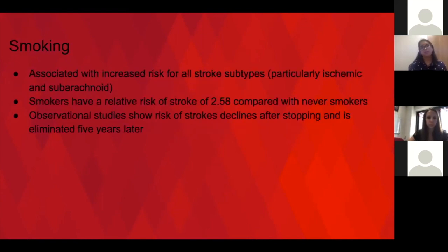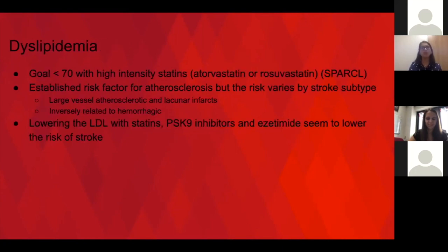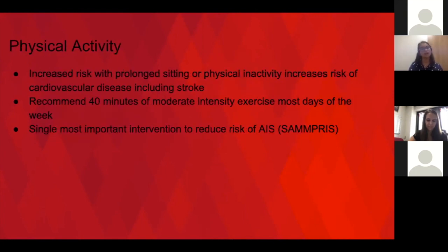Smoking increases the risk for all stroke subtypes, and at least five years out, stroke risk declines if patients become non-smokers. Diabetes increases the risk of stroke by doubling it — A1C less than 7 tends to be the goal, which we leave for PCPs to address. For dyslipidemia, it's tied to increased risk for large vessel atherosclerosis and lacunar infarcts, but is inversely related to hemorrhagic stroke. We shoot for an LDL goal of less than 70. The SPARCL trial showed that atorvastatin 80 mg reduces the risk of recurrent ischemic strokes, so we do try to aim for that goal.